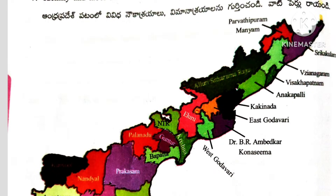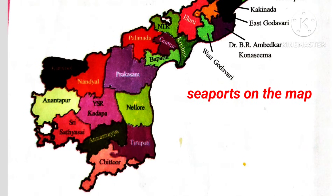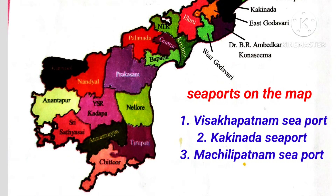Question number 7: Identify and label different seaports and airports on the map of Andhra Pradesh. Answer: Here is the Andhra Pradesh map. Airports: Visakhapatnam airport, Rajamahendravaram airport, Vijayawada, Kadapa, and Tirupati. Seaports: Visakhapatnam seaport, Kakinada seaport, and Machilipatnam seaport.